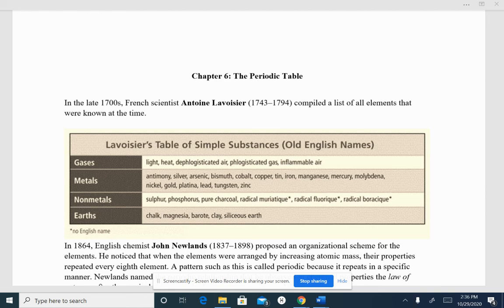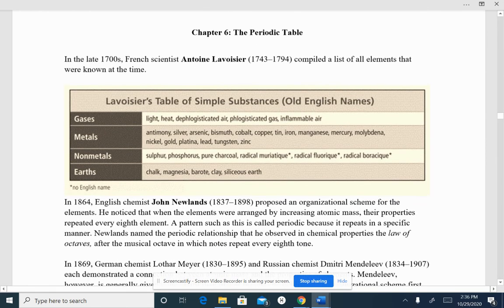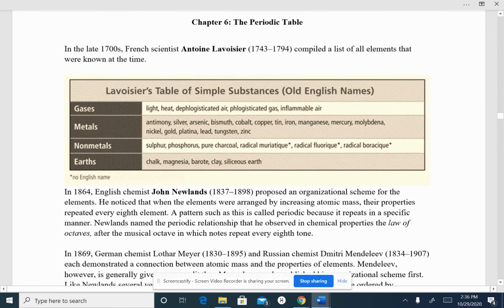In the late 1700s, we had a French scientist named Antoine Lavoisier. That name should be really familiar to you. He was the one that gave us the law of conservation of mass. Antoine Lavoisier also compiled a list of elements that were known at the time. These are the old English names. So gases, we had light, heat, deflogisticated air, flogisticated gas, and inflammable air.